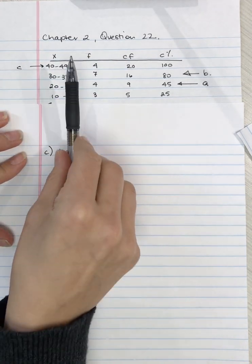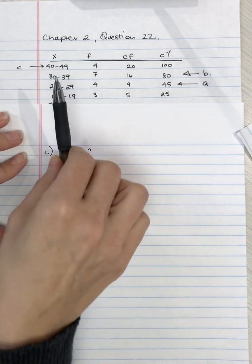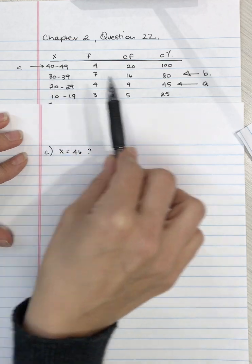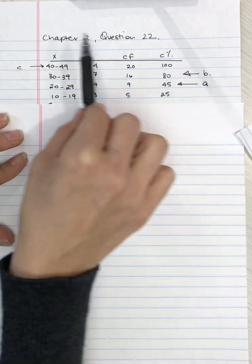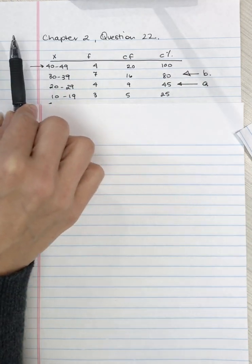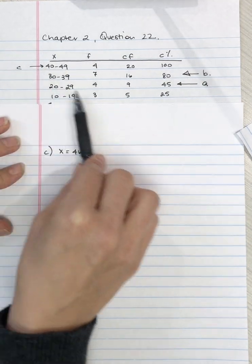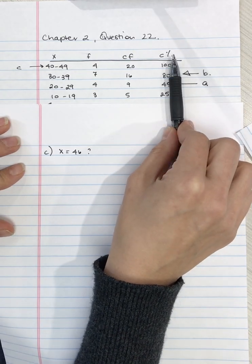Question C and coming up D are the opposite direction of B and A. So question B and A we start with the percentile and we try and find X. With C and D we have X and we're trying to find the percentile rank.